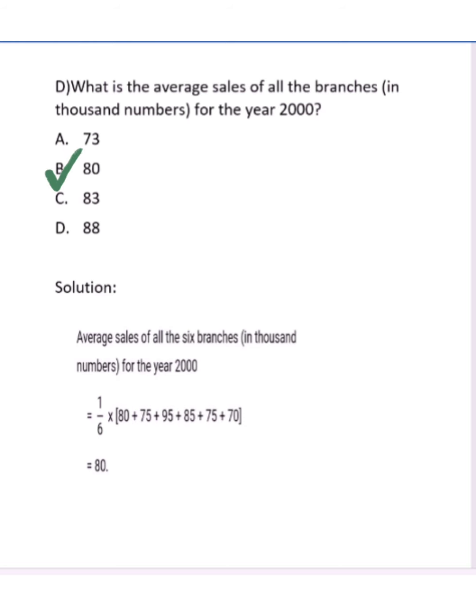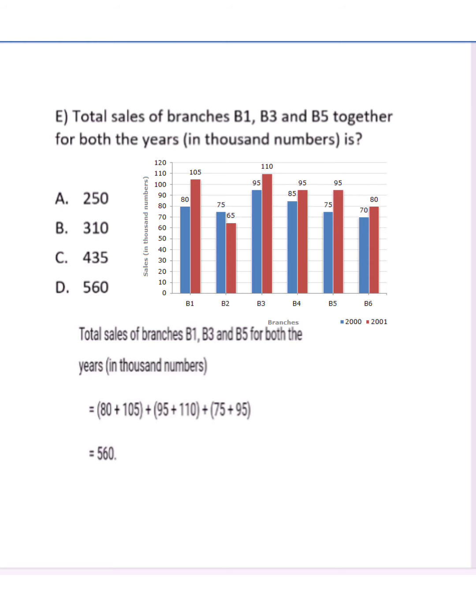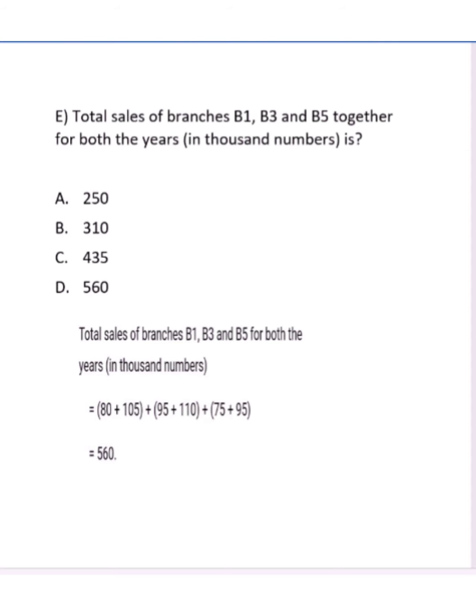Question number 5: Total sales of branches B1, B3, and B5 together for both years in thousand numbers. We have to take both years means B1 is 80 and 105, B3 is 95 and 110, and for B5 we have 75 and 95. After full summation, we get the value 560, so option D is correct.